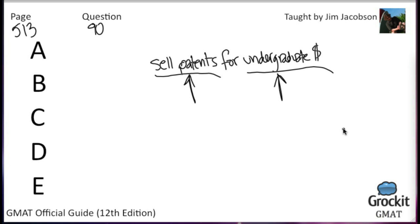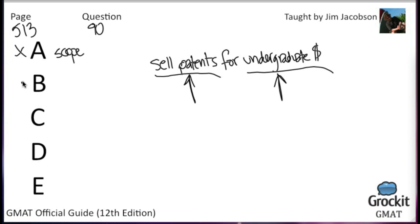Choice A: profit-making corporations interested in developing products based on patents held by universities are likely to try to serve as exclusive sponsors of ongoing university research projects. That's completely irrelevant — it doesn't matter what the corporations want as long as they can still sell the patents. Choice B: corporate sponsors of research in university facilities are entitled to tax credits under new federal tax code guidelines. Again, we don't really care about corporate sponsors; we are interested in the selling of patents from government-sponsored research. Both A and B are outside the scope.